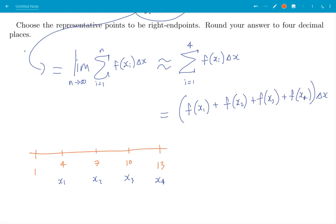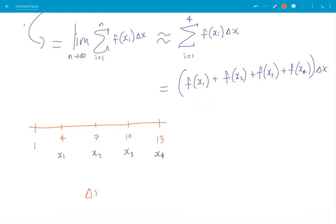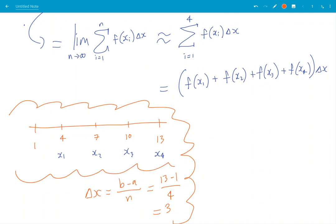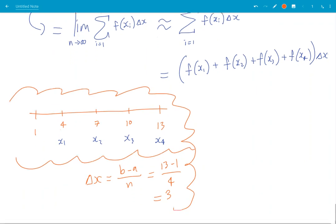Now what else, delta x was given in the definition of the definite integral, it's b minus a all over n. So in our case it's 13 minus 1 over 4, which is the number 3 we were talking about just a second ago. We'll put this in a thought cloud.